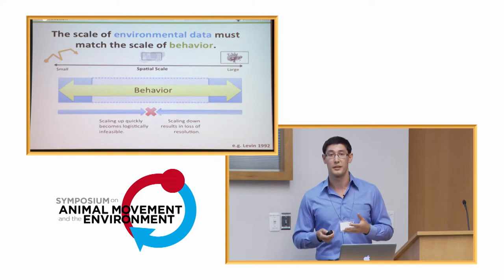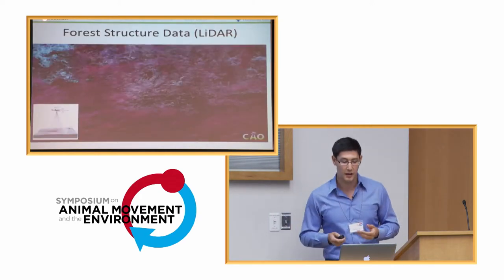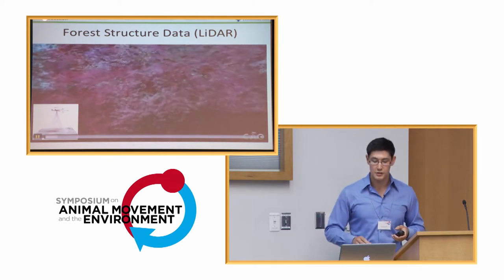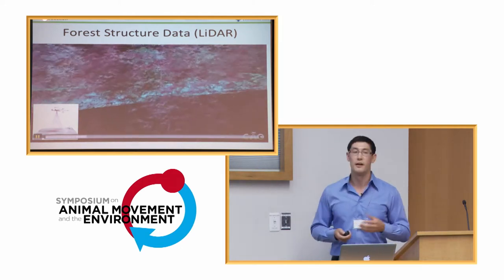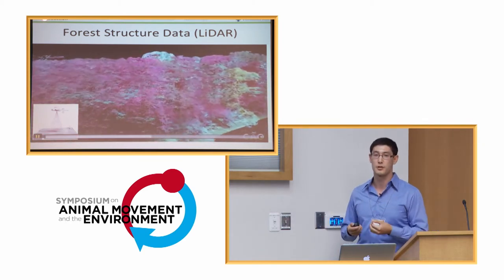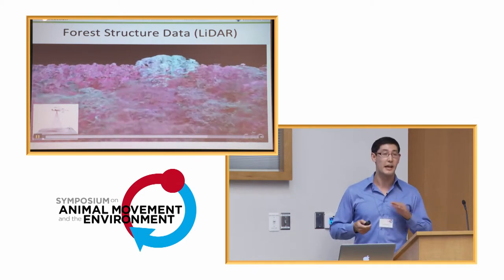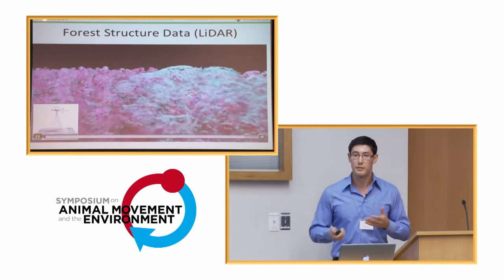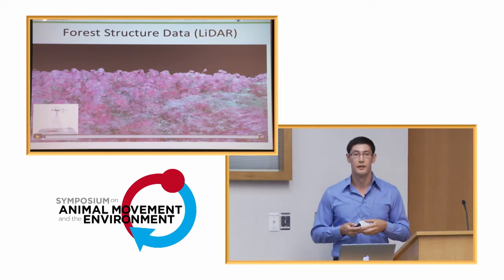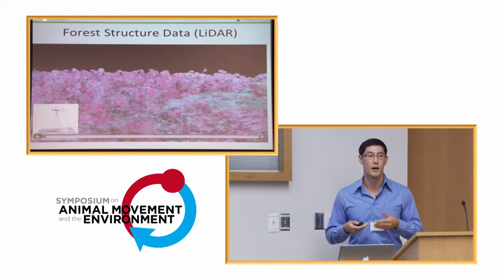The solution is to use something that can be sensed over a large scale but also captures three-dimensional structure — which is why I turned to LiDAR. LiDAR stands for light detection and ranging; it is essentially the laser version of radar. A light pulse from an airplane is sent down from above, and the rate at which those pulses return gives you an idea of the three-dimensional structure of the forest. LiDAR is not a new technology — it's been used in ecology since the 70s or 80s — but only recently has the resolution been strong enough to get structural measures in the dense canopy cover of a tropical forest. The LiDAR I'm using is from the Carnegie Airborne Observatory.